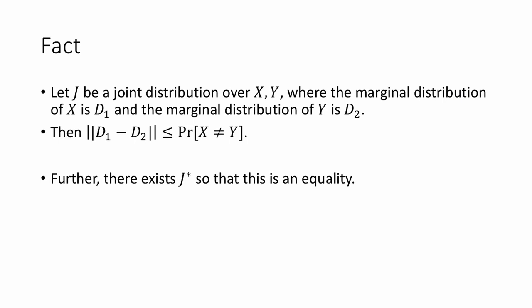Here is a useful fact about total variation distance, which is the dual definition of total variation distance. Suppose that J is a joint distribution over random variables X and Y, so that the marginal distribution of X is equal to d1 and the marginal distribution of Y is equal to d2, but they might be correlated in some funny way. Then the fact says: the total variation distance between d1 and d2 is at most the probability that X is not equal to Y. Further, there exists some J-star, some joint distribution on X and Y, so that this inequality is an equality.